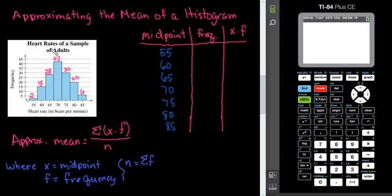And then, under the frequencies, we would just take the number at the top. So, in this case, for 55, there were 2 of them. For 60, there were 15. For the 65, we have 28. For 70, we have 42. For 75, we have 30. For 80, we have 20. And for 85, we have 6.